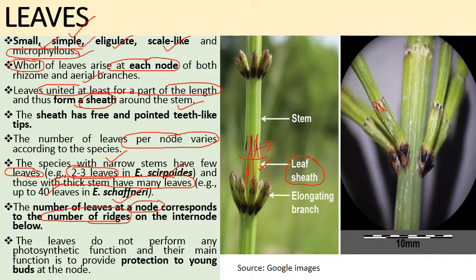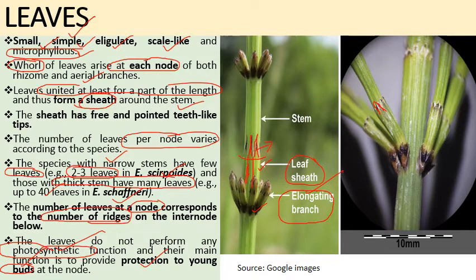The leaves do not perform any function of photosynthesis. Their main function is to provide protection to the young buds at the nodal region. These young buds will elongate and grow to form the full-fledged aerial branch of Equisetum.